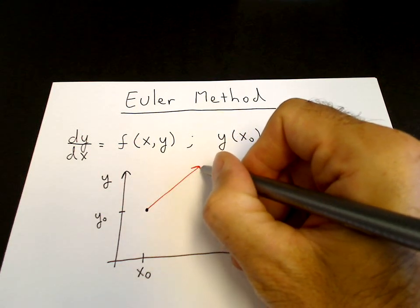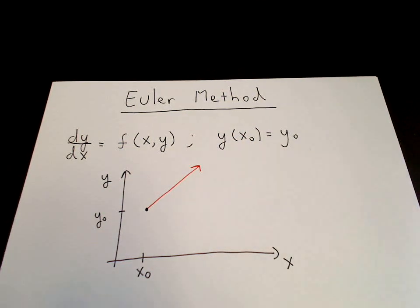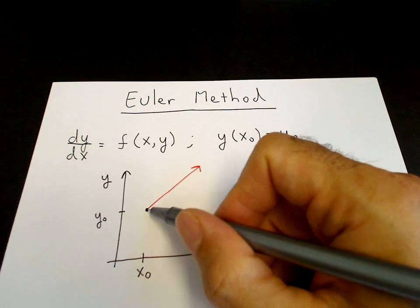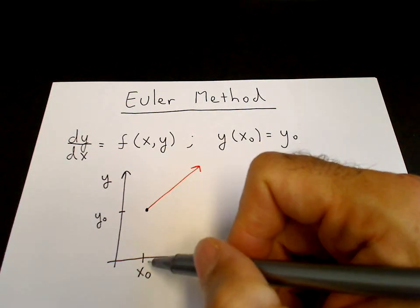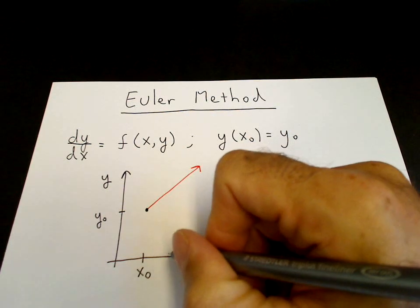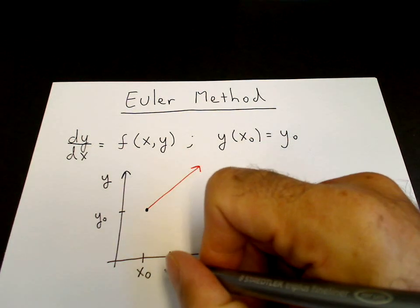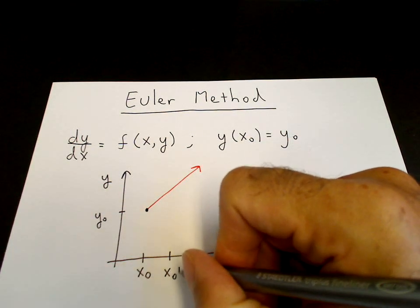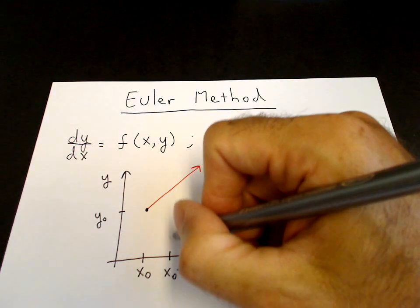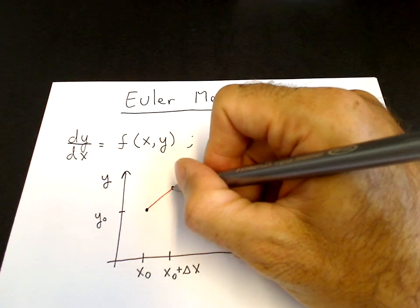Let's say f(x₀, y₀) is positive. So that is the tangent line. So we know that the function y of x will follow along the tangent line at least for a value of x only slightly larger than x₀. So we can march the solution to a value slightly larger than x₀, say to the value of x₀ + Δx, along this tangent line.